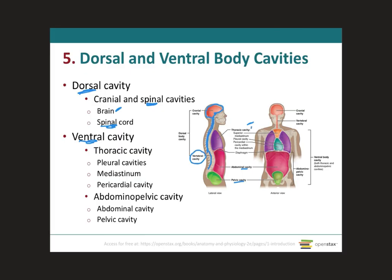Within the thoracic cavity, we're going to have three different types of cavities. The cavity where the lungs are located is called the pleural cavity. We also have the pericardial cavity, located in the middle, which will house just the heart.